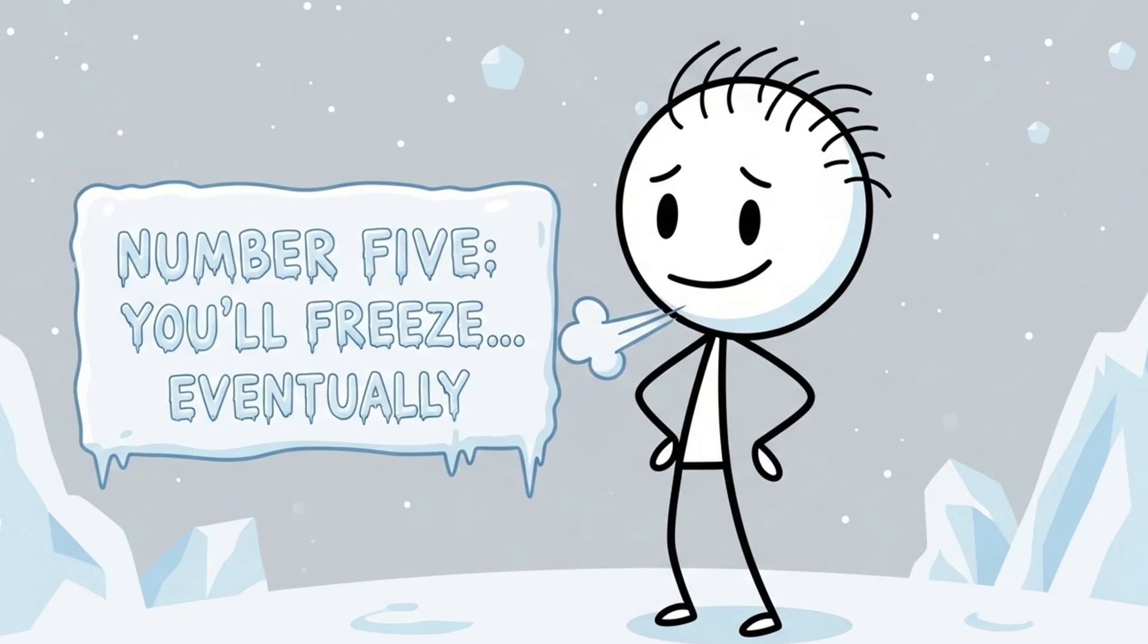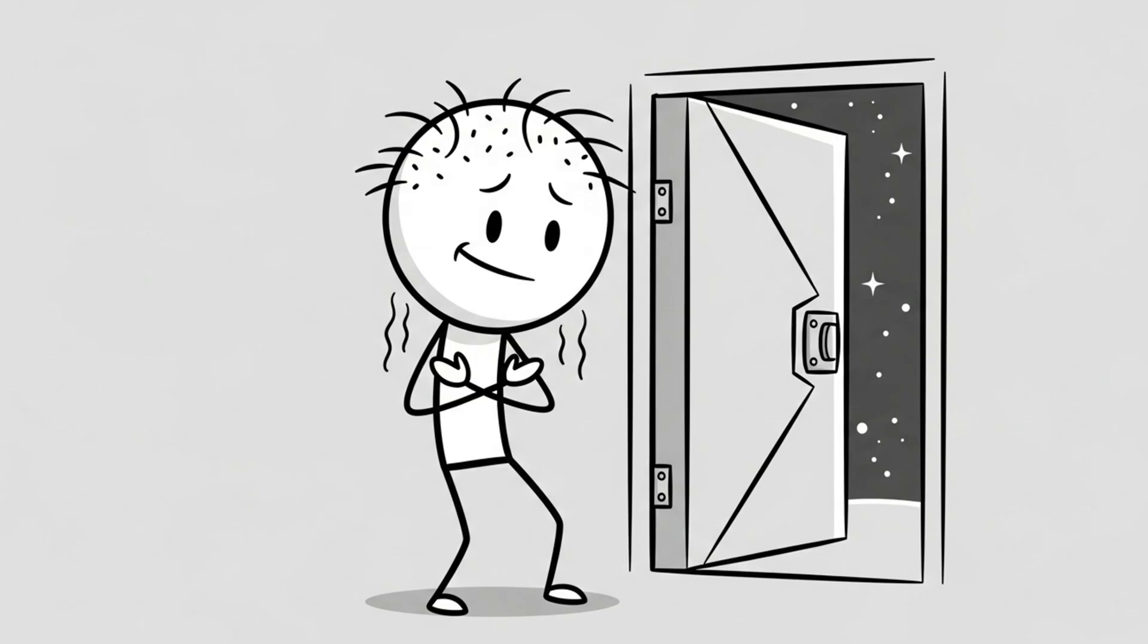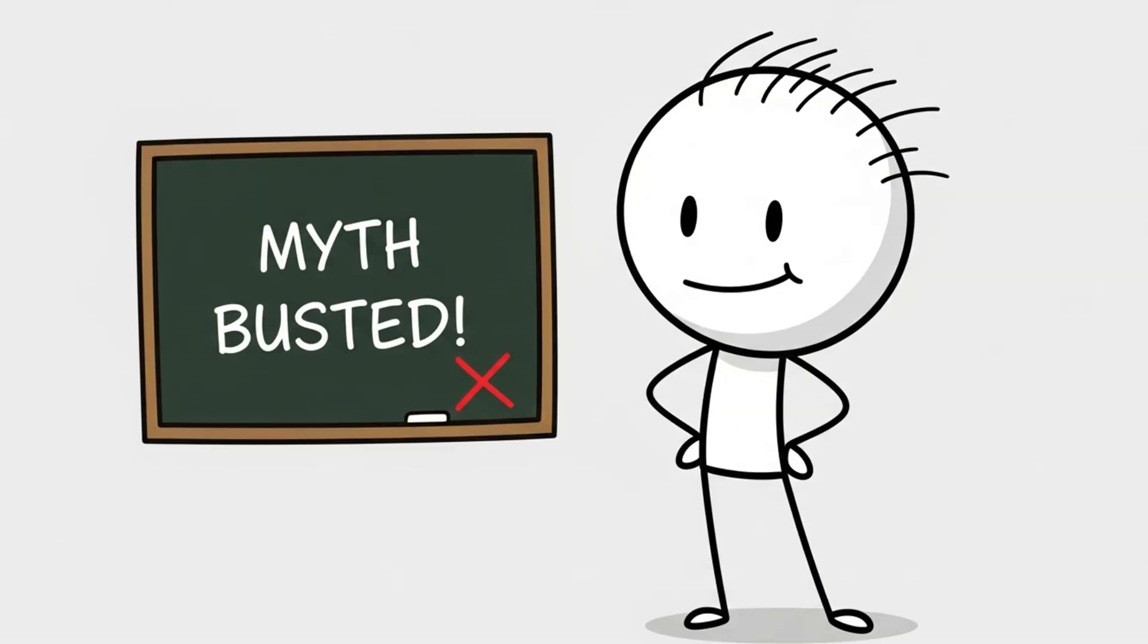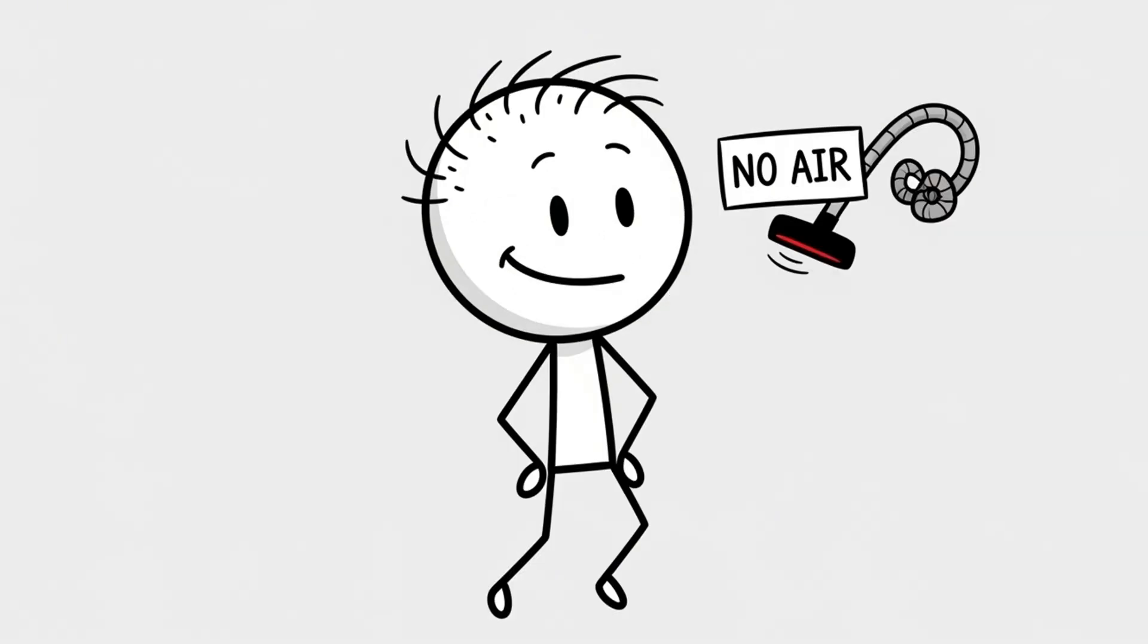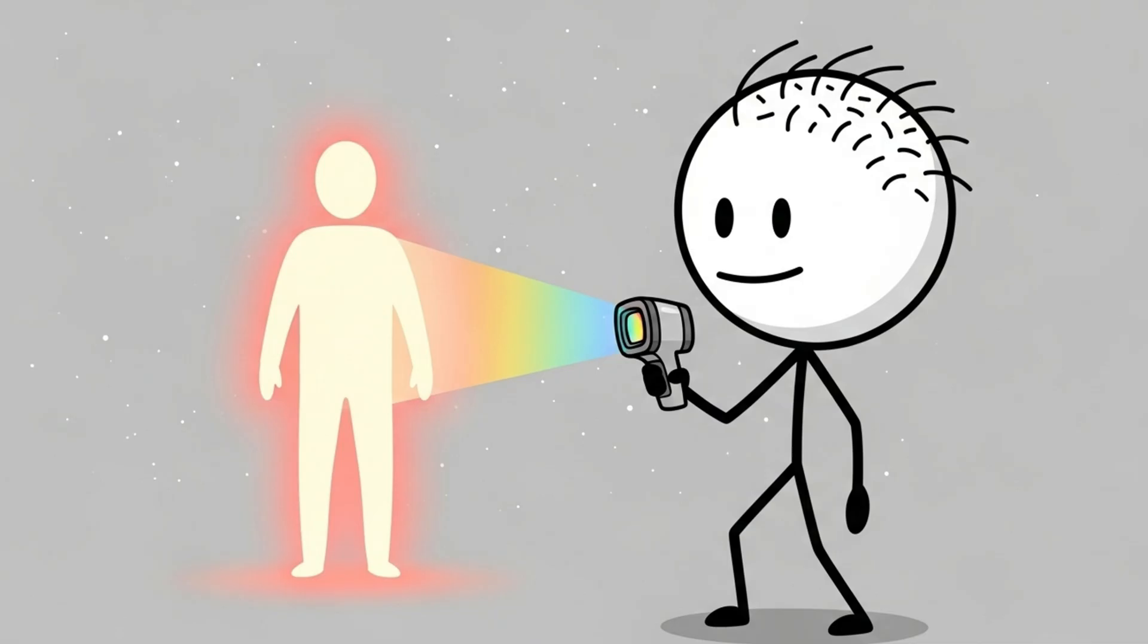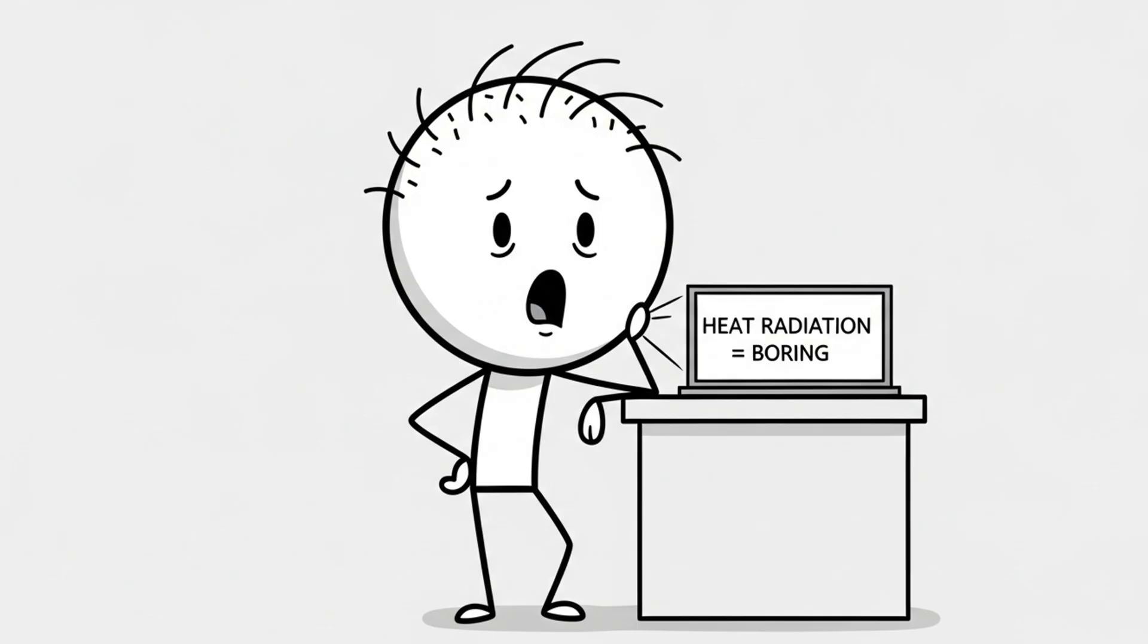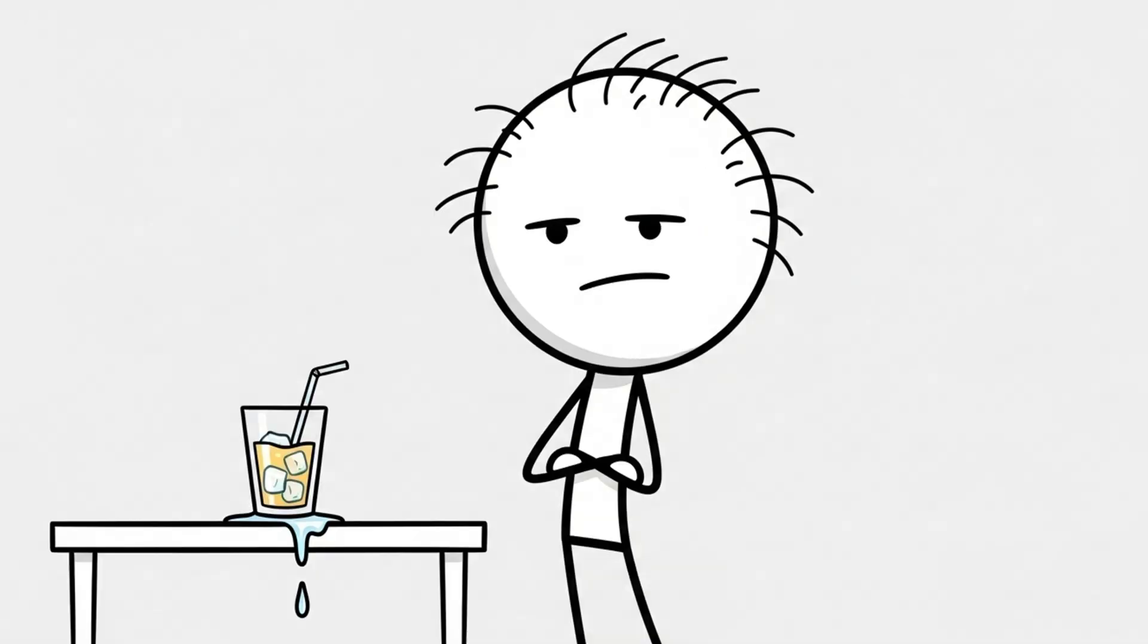Number five, you'll freeze. Eventually. Here's a common space myth that you'll instantly freeze the second you leave your spaceship like a popsicle dropped into deep space. That's not quite how it works, and weirdly, the truth is way creepier. In space, there's no air to conduct heat away from your body, so despite the fact that the background temperature is close to absolute zero, you won't immediately turn into a human icicle. Instead, your body loses heat very slowly through a process called radiation, which is much less dramatic than it sounds. It's like trying to cool down by staring intensely at an ice cube. It works, eventually.